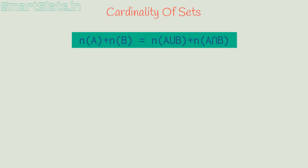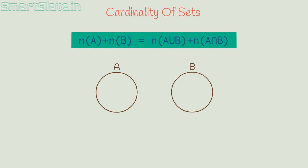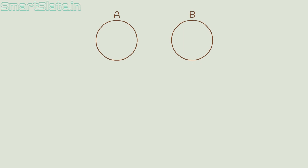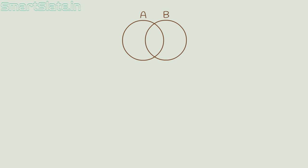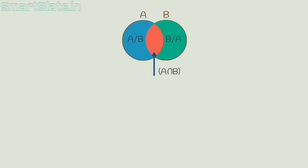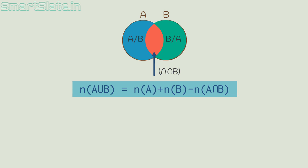Let me establish this same relation using a Venn diagram. These are the two sets, set A and set B. This represents the union of set A and B. This area represents the intersection of A and B — the common elements between A and B. This shaded area represents A minus B, which is all the elements from A except the common elements between A and B. This area represents B minus A — all the elements from B except the common elements between A and B. Let's prove that cardinality of A union B equals cardinality of A plus cardinality of B minus cardinality of A intersection B.